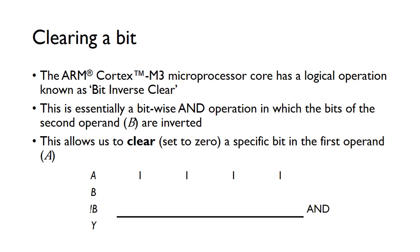It allows us to clear just a specific bit in the first operand A. In this example, suppose A is 11111. We might want to clear this particular bit, turn this one bit into a zero. We can do that using the Bit Inverse Clear operation.